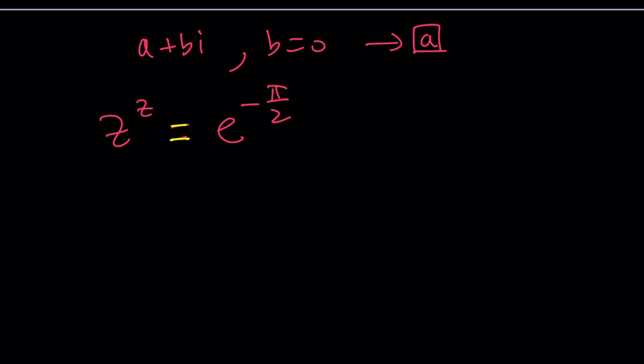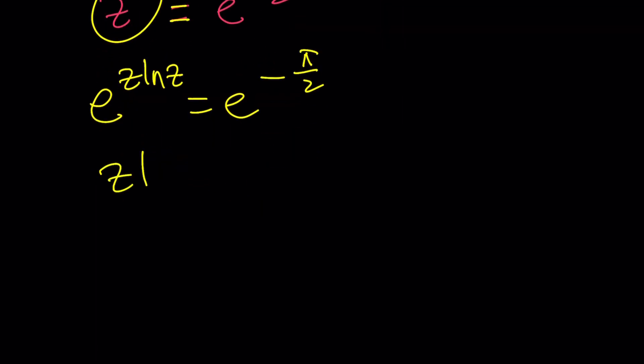Right okay so let's see how we can solve it. First I'm going to use the definition: z to the z can be written as e to the power z ln z. And then from here we get a direct equation which is nice: z ln z equals negative pi over 2. You know the value of negative pi over 2 so you can always put it into a calculator but calculators can't solve this equation. Isn't that amazing?